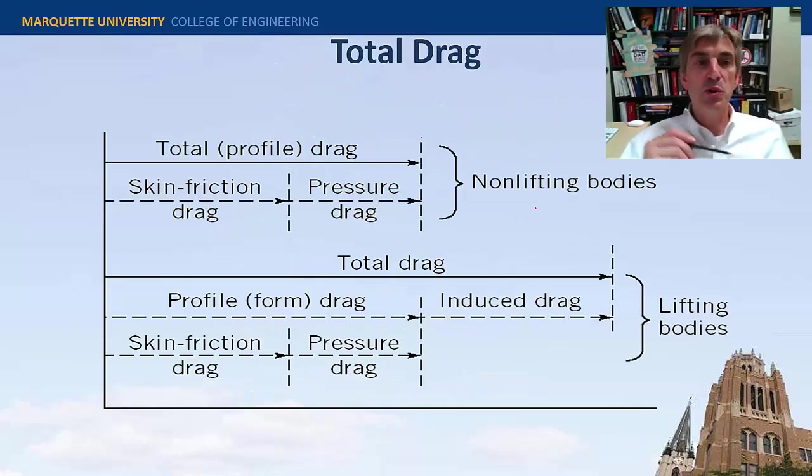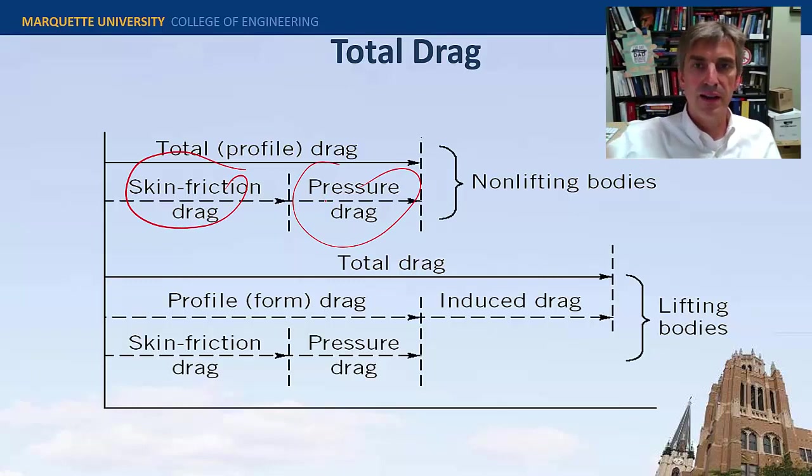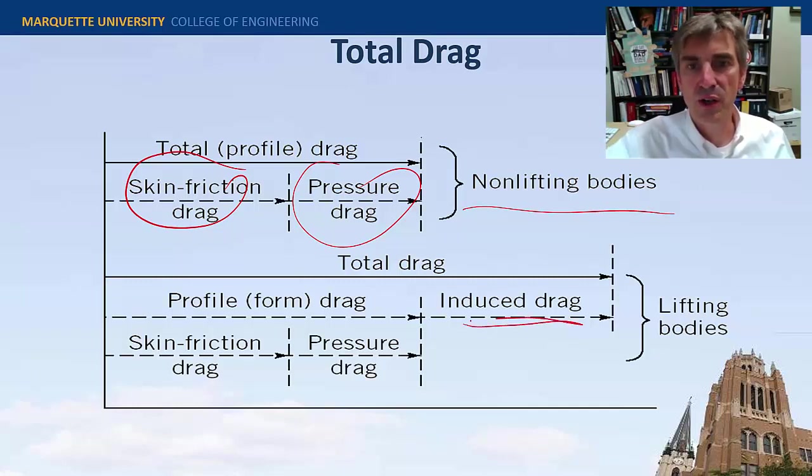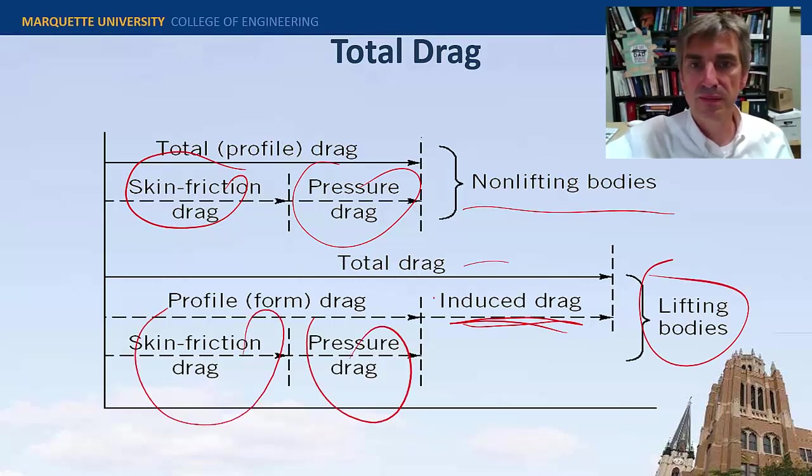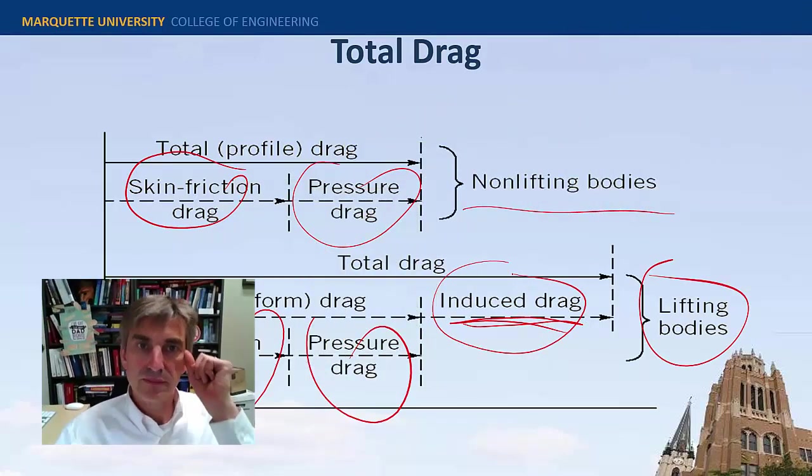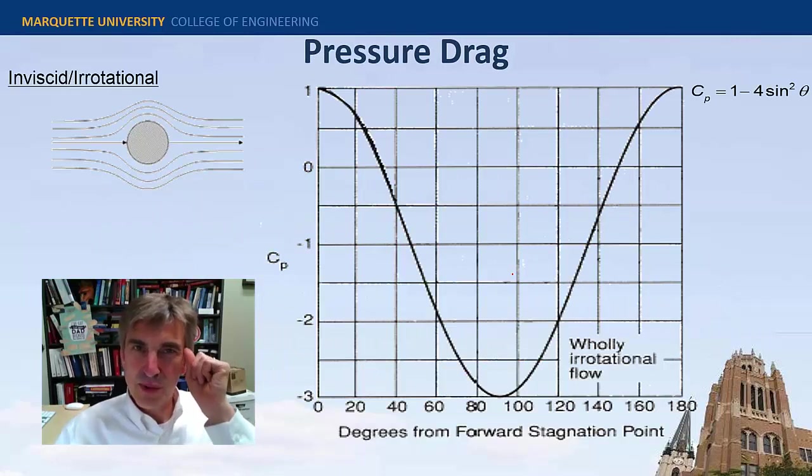Drag force is composed of two components. A skin friction drag and a pressure drag. That's for non-lifting bodies like a circular cylinder or something. If there's a lifting component, then there's additional vortices that are generated, these wingtip vortices and things like that. And that induces an additional drag called induced drag. So for lifting bodies, there's three components to drag. Let's talk about each component.